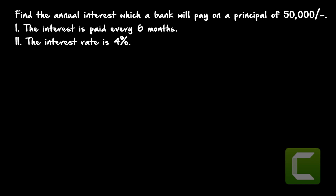The first statement is: the interest is paid every six months. The second statement is: the interest rate is four percent. The options are: (A) statement one alone is sufficient, (B) statement two alone is sufficient, (C) both statements are required, (D) either statement one or two is sufficient, and (E) neither statement is sufficient.